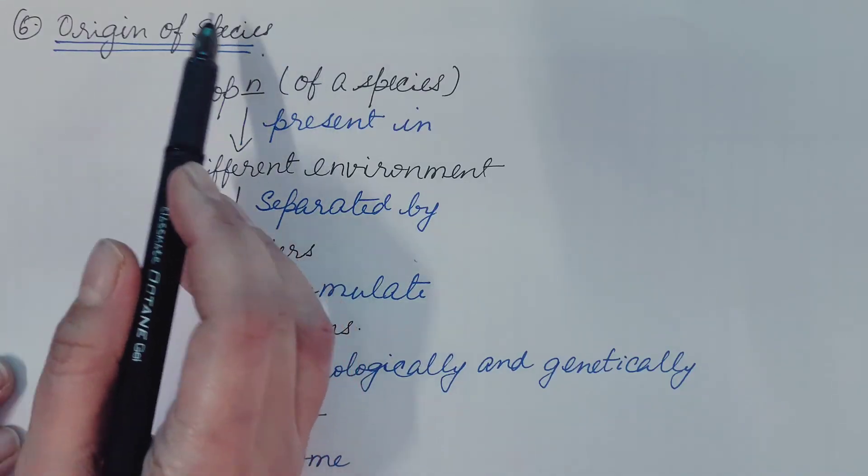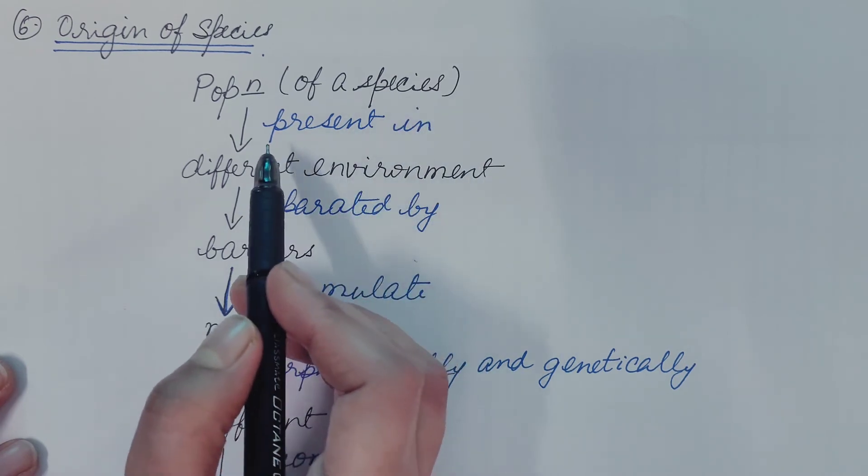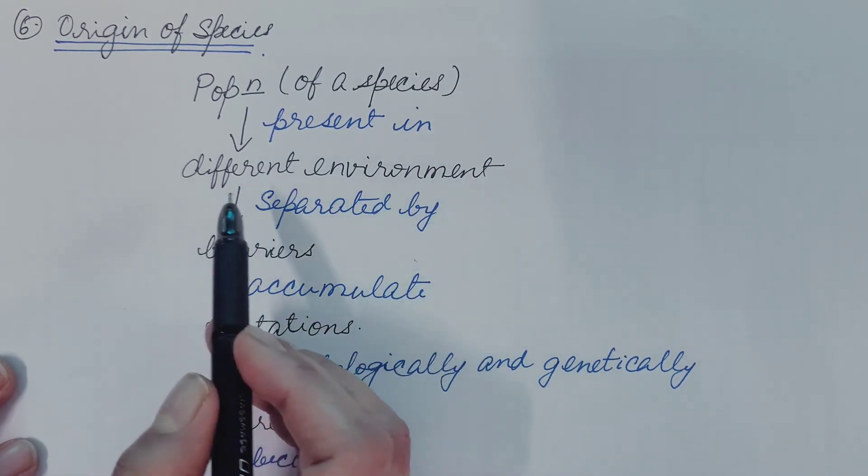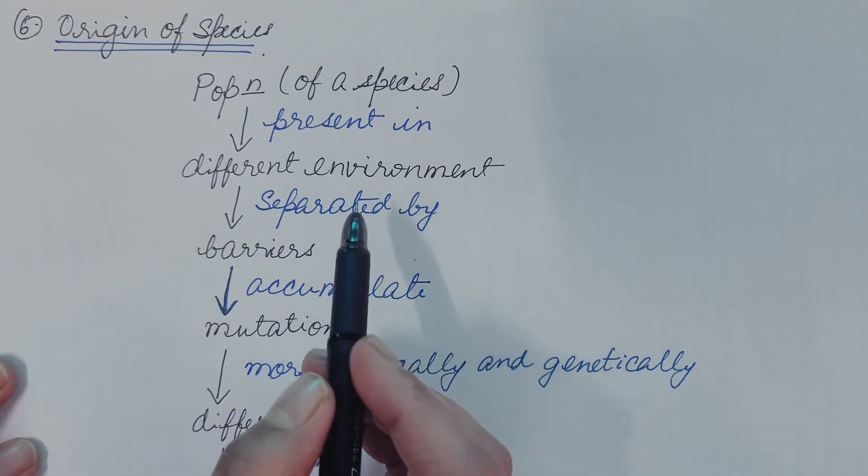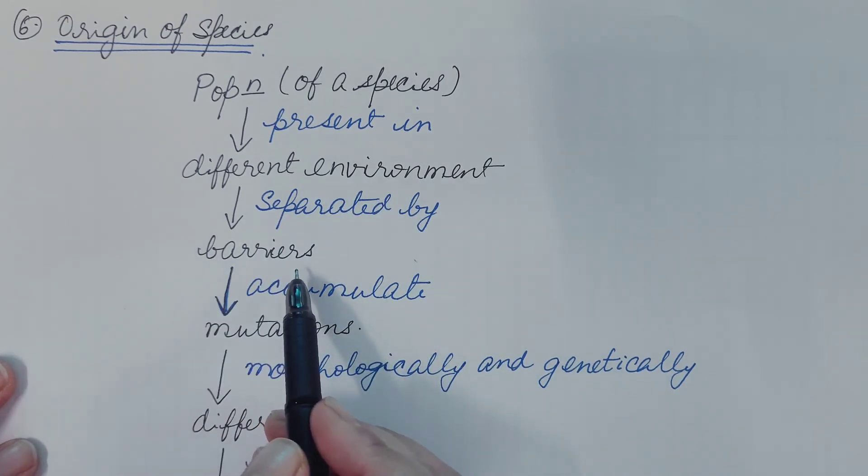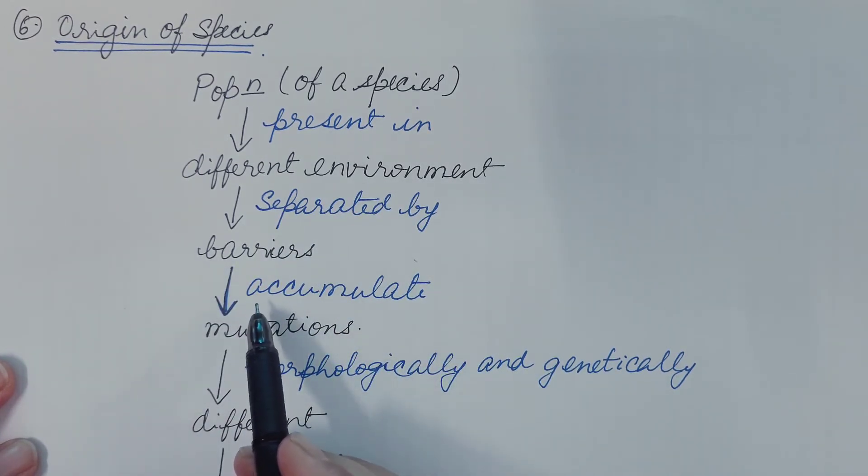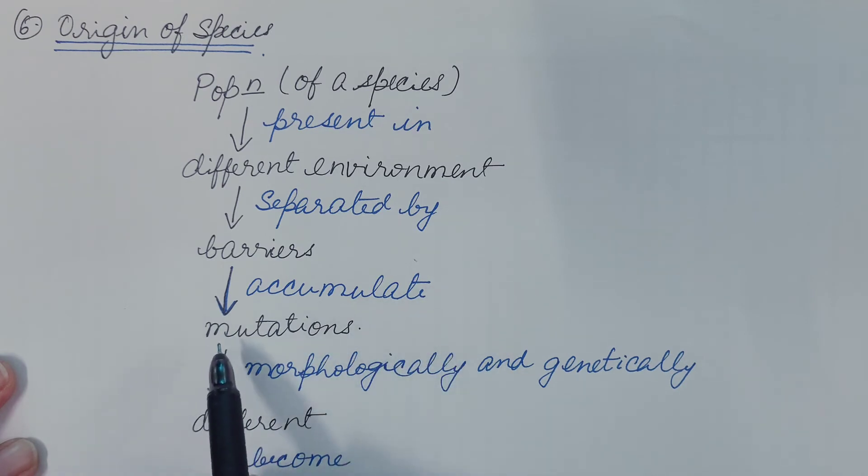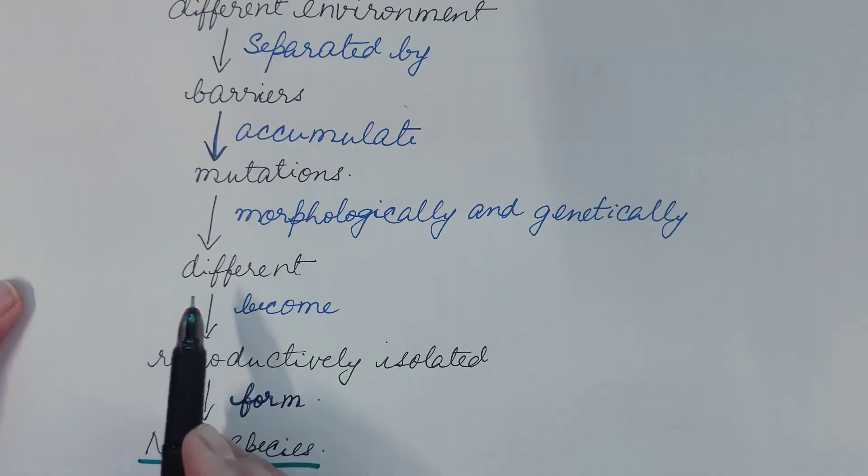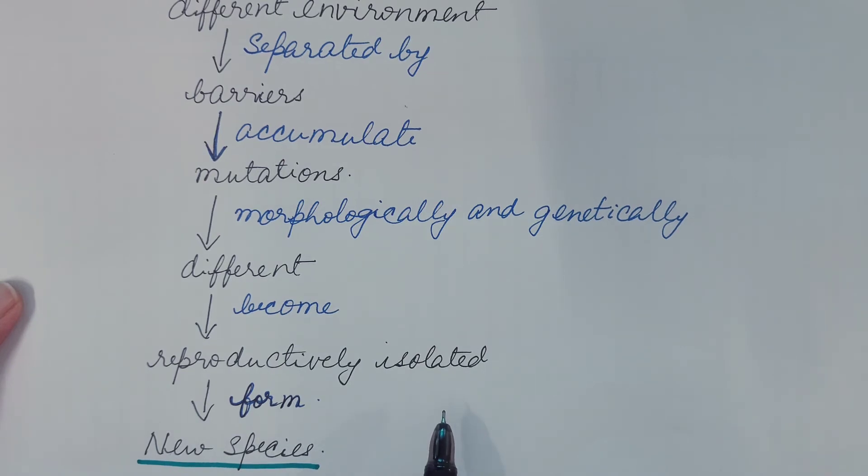So let us conclude the origin of species. Population of the species when it is present in different environment, it is separated by barriers like physical, geographical barriers, regions which results in the accumulation of mutations and these become morphologically and genetically different. Also these become reproductively isolated because now these interbreed among each other but not to the related species and hence form new species.